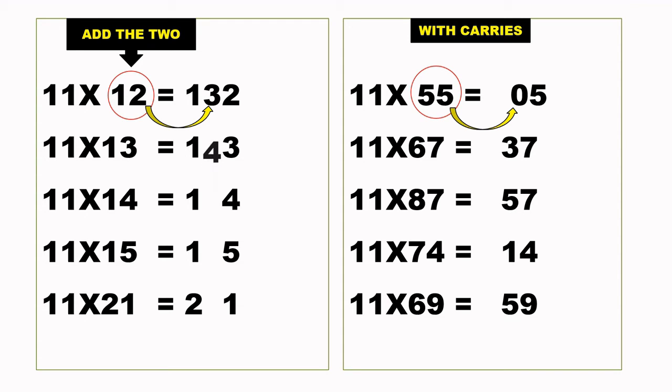11 times 13 is 143, 11 times 14 is 154, 165 for 15, and 231 for 21.